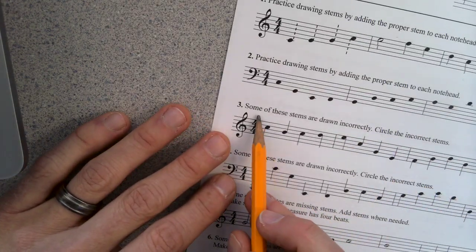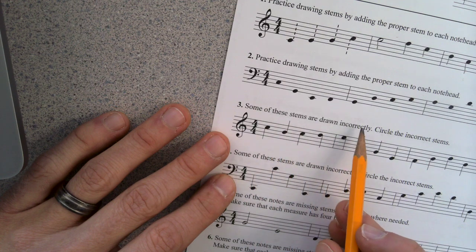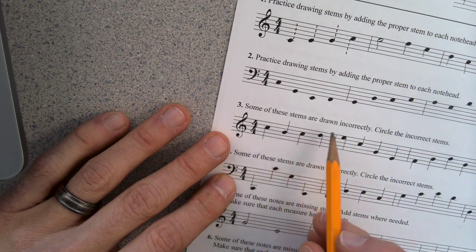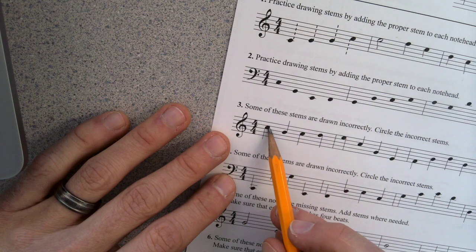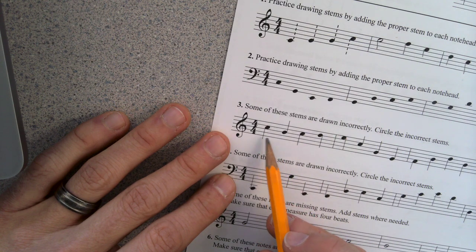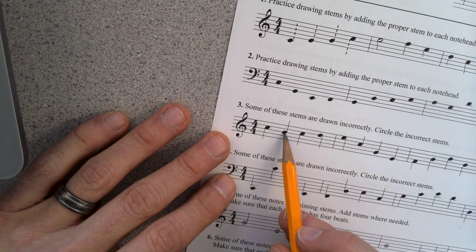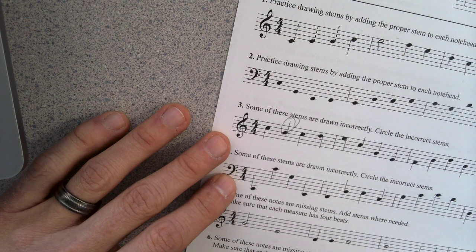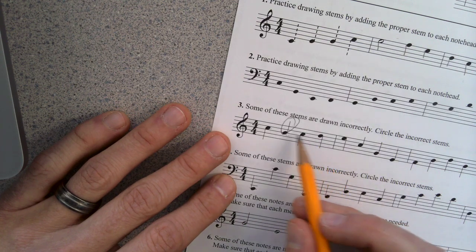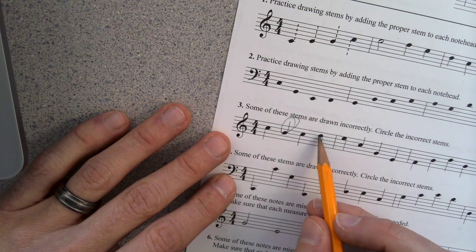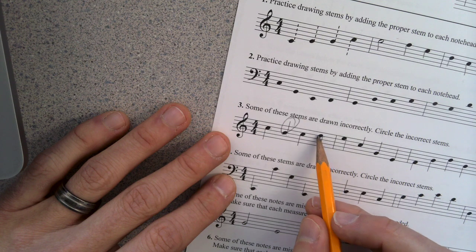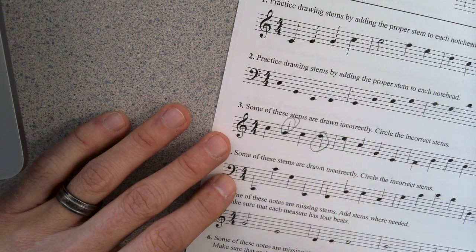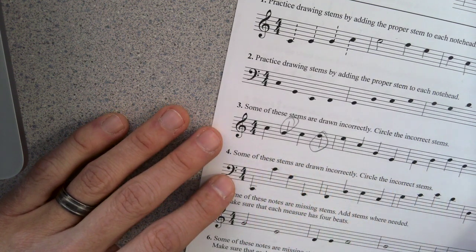Right here. Some of the stems are drawn incorrectly. So as you know, because you can see right here, this one looks good. It's above the middle line. Stem is on the left going down here. Wait a minute. That is the middle line. And the stem is on the right going up. That's not correct. Same thing with this one. It's going the right direction, but it's on the wrong side. It needs to be on the left going down. So that one's incorrect. So circle the rest of the stems that are wrong.